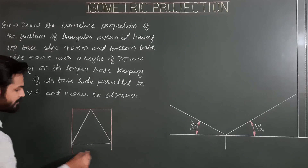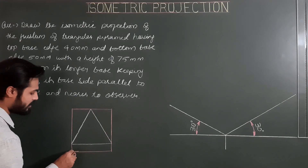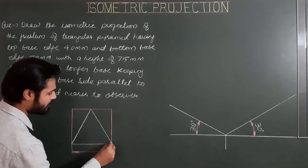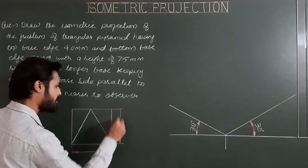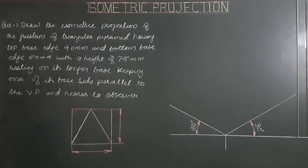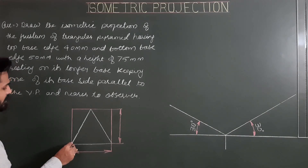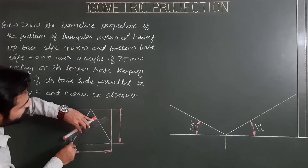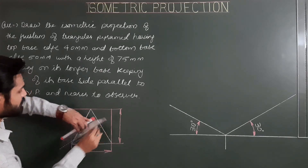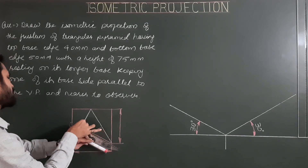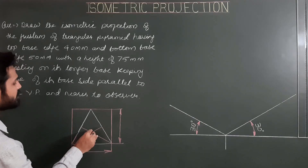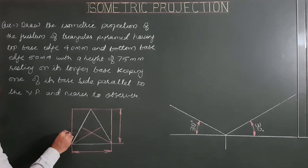Now we have the dimensions of the helping figure, or helping box. Next, we find the center of the triangle. For finding the center, draw lines from each corner to the opposite midpoint; the common intersection point is the center. Locating the center of the triangle.